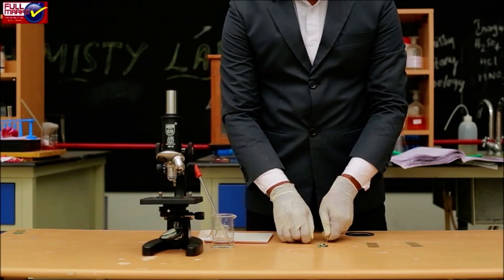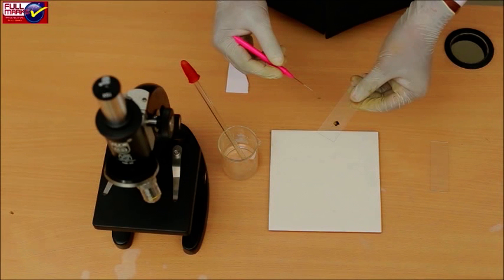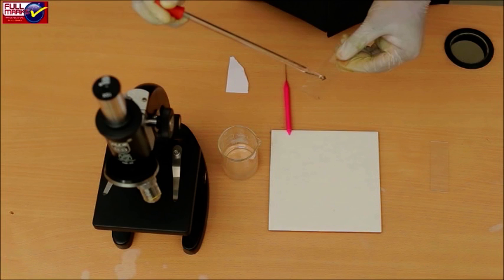Separate the anthers and discard the other parts of the bud. Put one or two drops of acetocarmine stain and squash the anthers. Leave the material in the stain for five minutes.